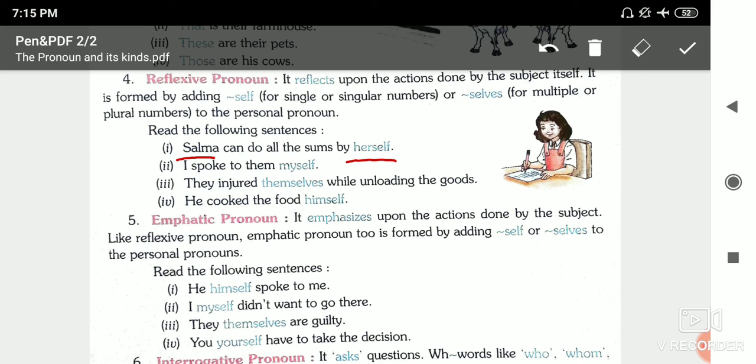So for 'he' we use 'himself', for 'I' we use 'myself', for 'they' we use 'themselves', and for 'you' we use 'yourself'. Now how to identify if it's reflexive or emphatic? Where there is distance between the pronoun and 'self' word, it's reflexive. Where they are written together like 'I myself', 'they themselves', it's emphatic pronoun.